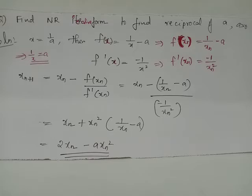When you replace x by x_n on both LHS and RHS of expressions of f(x) and f'(x), you will get f(x_n) equals 1/x_n minus a and f'(x_n) equals -1/x_n².